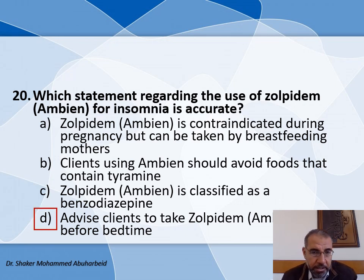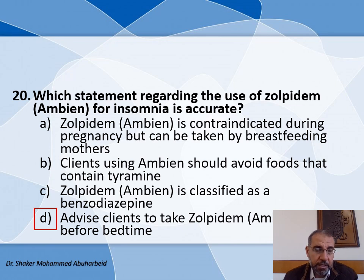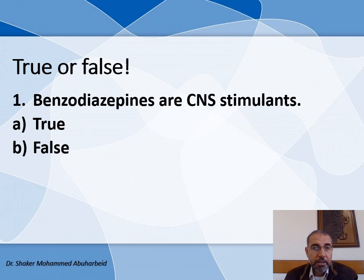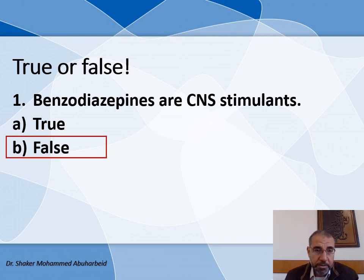These are examples of 20 multiple choice questions. Now we will discuss the other type of questions, which are true and false. The first question is: Benzodiazepines are CNS stimulants — the answer is false, because benzodiazepines are CNS depressants.